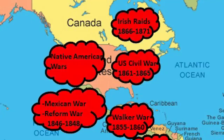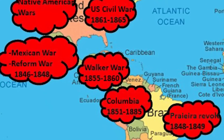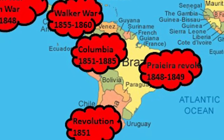There was the Mexican War in 1846 to 1848, where a U.S. expeditionary force went to Mexico and defeated it. There was the Walker War, where a U.S. filibuster went down to Nicaragua and took it over — a guy by the name of William Walker — and he was defeated by an army led by Costa Rica of all nations. Then there were the Irish raids that occurred after the Civil War.